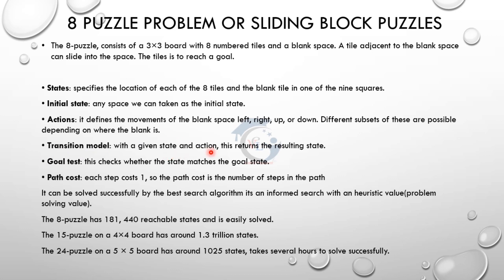We are going to create a transition model and goal test. What we are going to do is check whether the final state equals the goal state. We are going to check the heuristic value — when the heuristic value is zero, that is the goal state. Path cost: if we cross every path, the cost is 1. We are going to check the final goal state and the path cost.